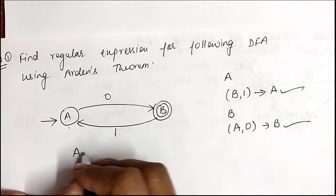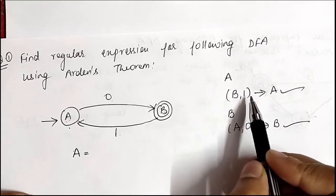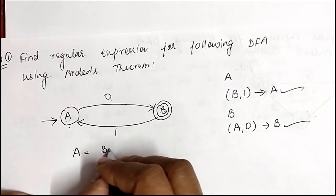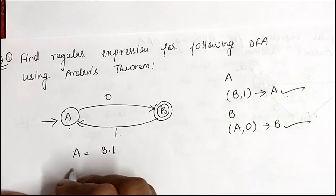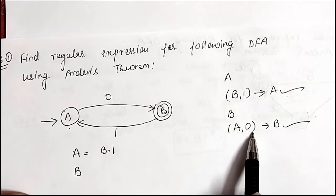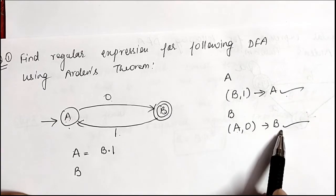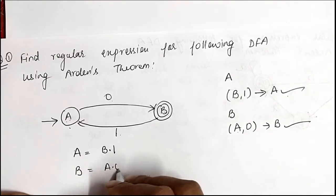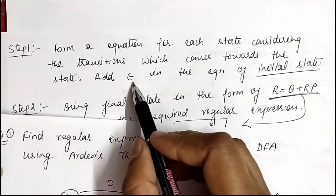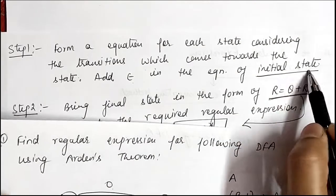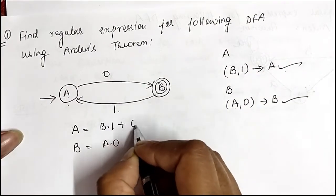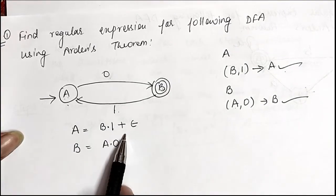The equation for state A is B·1, and the equation for state B is A·0. Since A is the initial state, we add an epsilon transition to its equation. So the equation for A becomes: A = B·1 + ε.